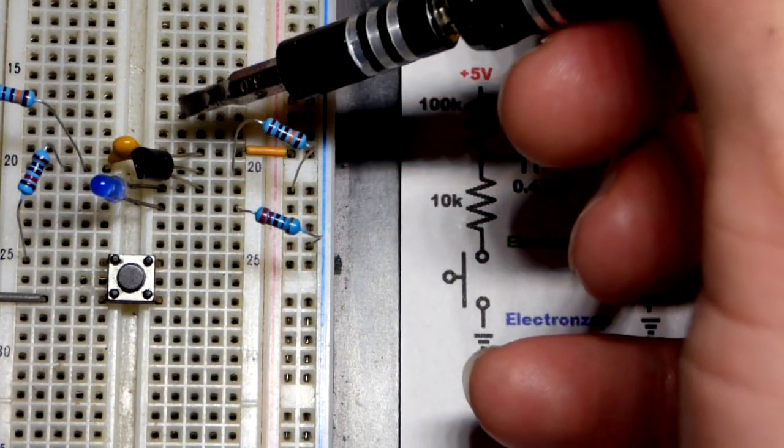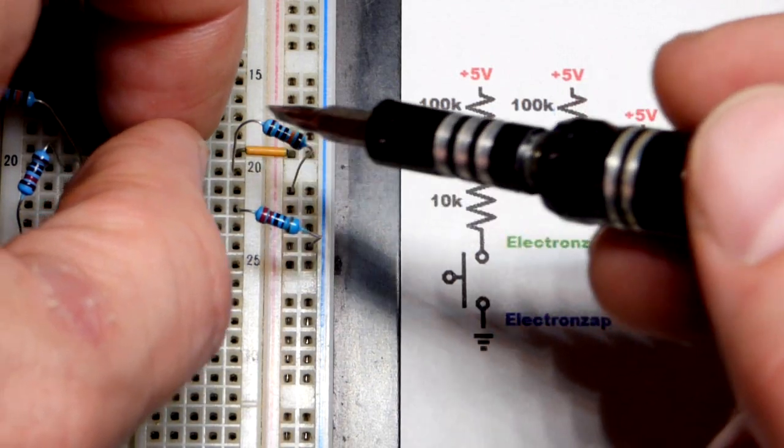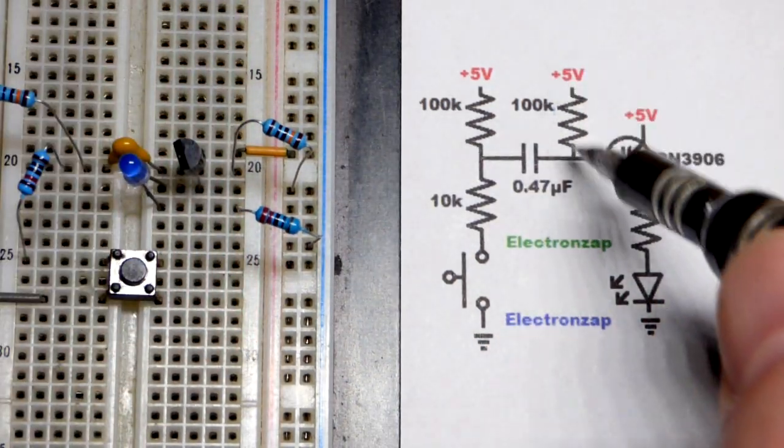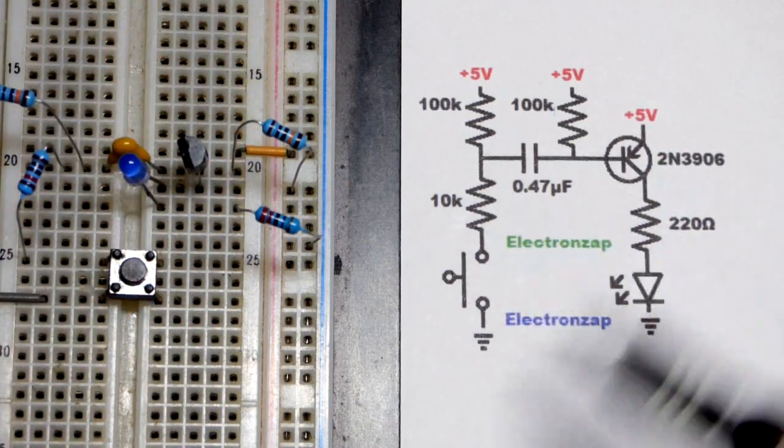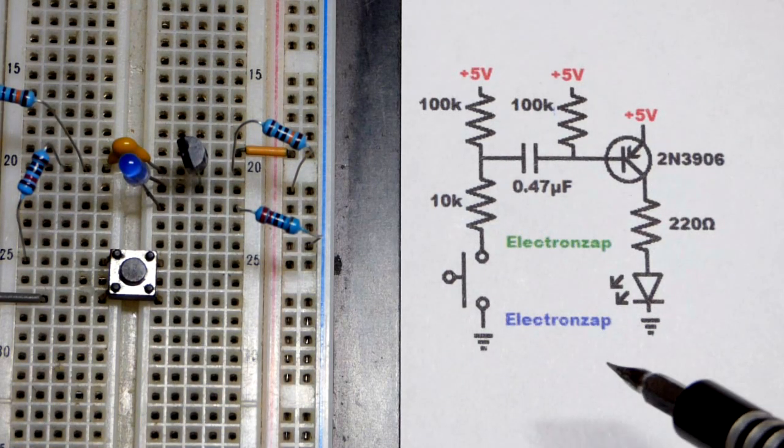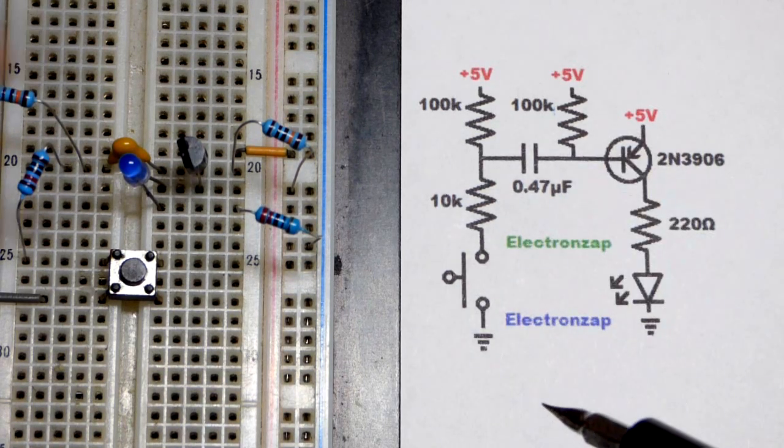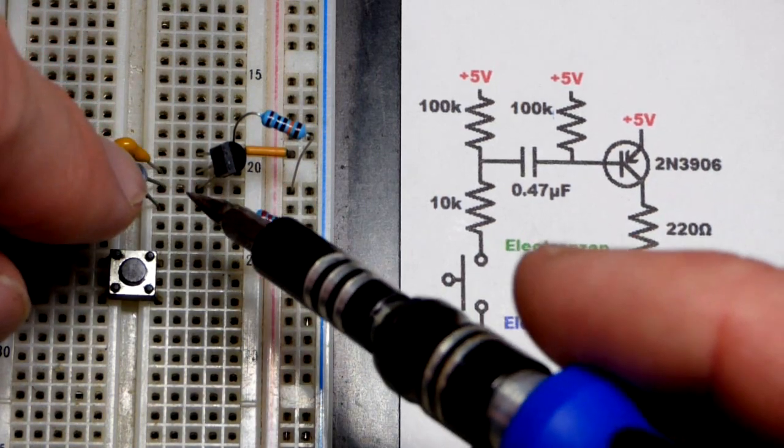You can see positive supply to the top pin, the emitter. We got the flat side to the left, base in the middle. We got a 100,000 ohm resistor going to the positive supply there. With these values I just reused the values I used in the NPN bipolar junction transistor video. I didn't try to make the circuit perfect by any means. I just got it working and pretty much went from there.